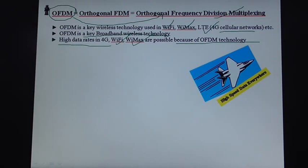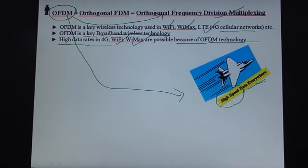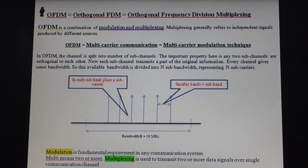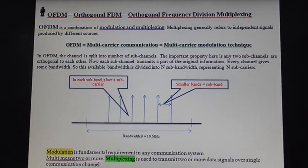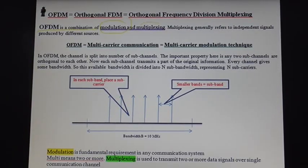The need for OFDM is the thrust for high data rates in future wireless communication systems as well as present wireless communication systems. OFDM is a combination of modulation and multiplexing techniques.